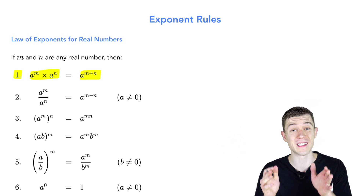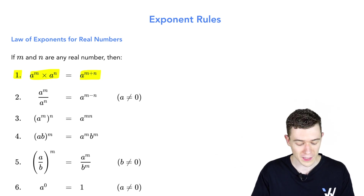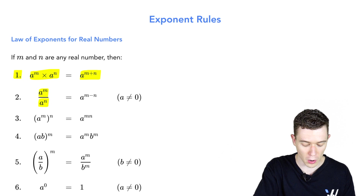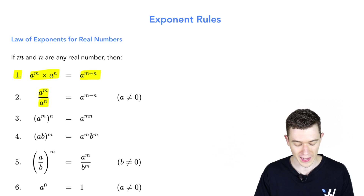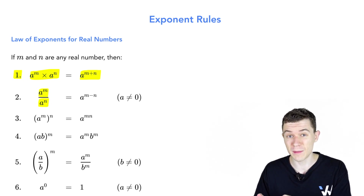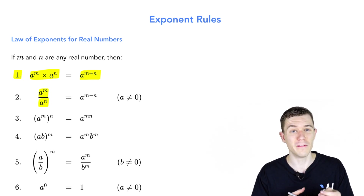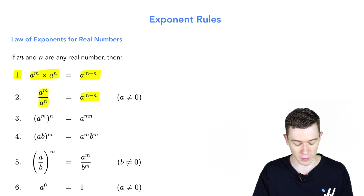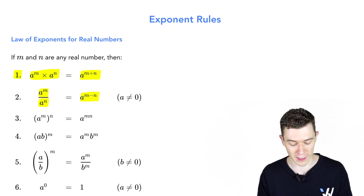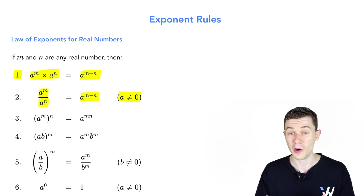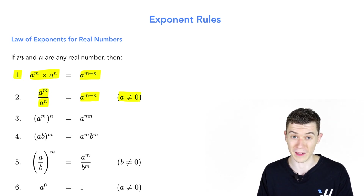We'll be using this quite often, almost as much as we'll be using number two. A to the m over a to the n — if multiplication means add exponents, division of like bases means subtract exponents: the top exponent minus the bottom exponent. Note that a cannot be zero, or we'd be dividing by zero.